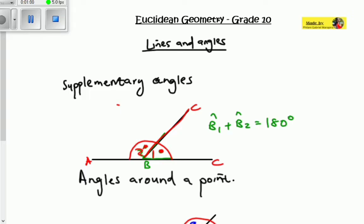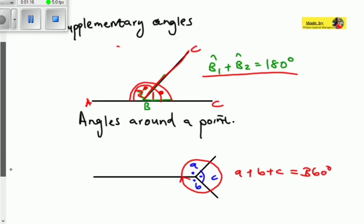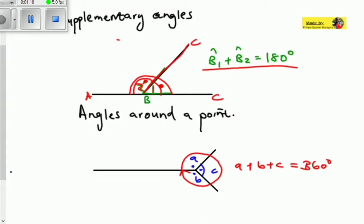For this case, we have got angle B1, this space, and then angle B2, this other space. So if we're going to add those angles, they must always give us 180 degrees. Those are called supplementary angles because they actually add up to 180 degrees.